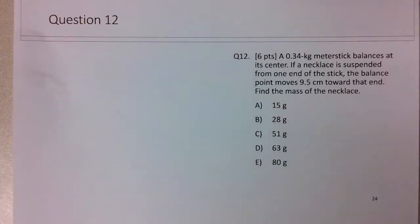In question 12, we're looking at a static equilibrium center of gravity type question. We've got a 0.34 kilogram meter stick. It's balancing at the center, and if the necklace is placed from one end of the stick, then the balance point moves 9.5 centimeters toward that end, and we're asked to find the mass of the necklace.